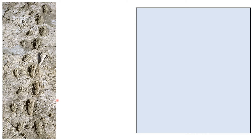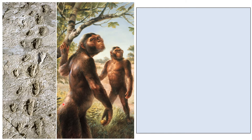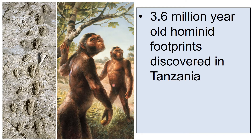Moving on, what do you think this is? We've got a large footprint and a smaller footprint. These footprints belong to our ancestors — quite small. They were uncovered and they're from 3.6 million years ago. So these are primates — maybe not humans in the way that we would define our species, but probably developed into our species. They're our ancestors and they're 3.6 million years old.